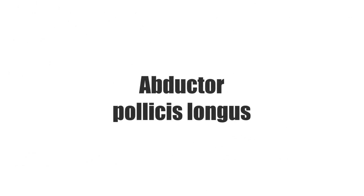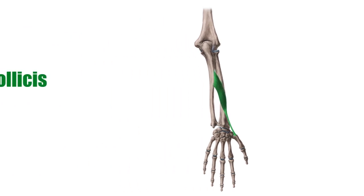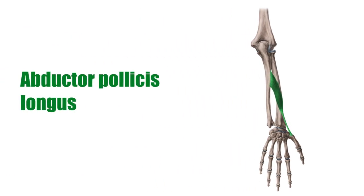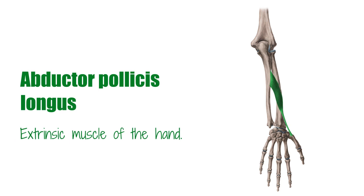Hello there once again, it's Matt from KenHub, and in this tutorial we will be discussing the abductor pollicis longus. The deep extensors of the forearm consist of five muscles located at the posterior side of the forearm. One of them, the abductor pollicis longus, an extrinsic muscle of the hand, is going to be the focus of this tutorial.